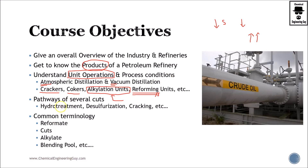An important aspect is to get a feeling for the several processing pathways. A cut, for instance, can be naphtha, gasoline, or kerosene. We'll explore why we need to hydrotreat them, why desulfurization is required, why some cuts are cracked and others are alkylated, why others are reformed, and why others are converted into coke.